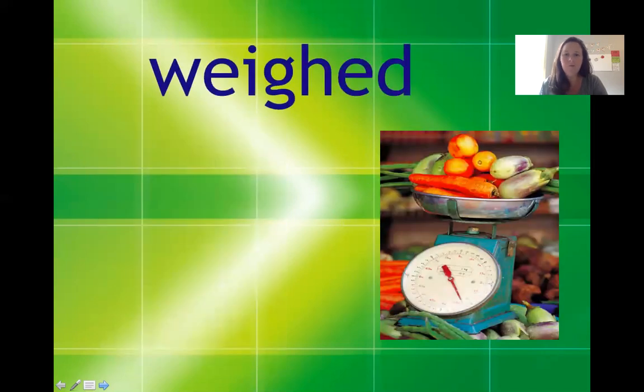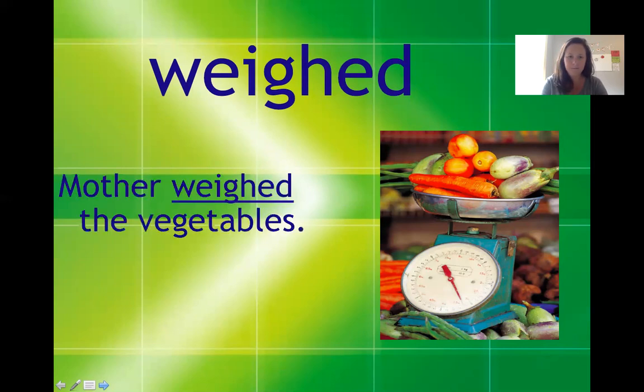Here we have the word weighed and as you can see there's a scale with some fruit in there. Our sentence is mother weighed the vegetables. So if you think about it using the context clues you can find out that this is a verb. It's something you do. And you know it's a verb because they're going to place something on a scale.